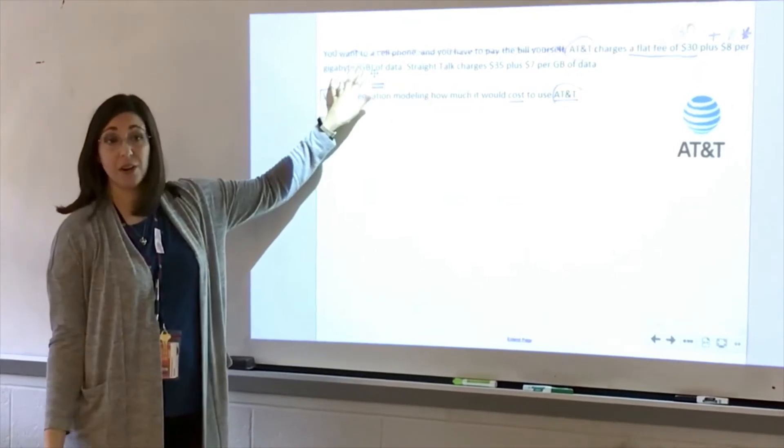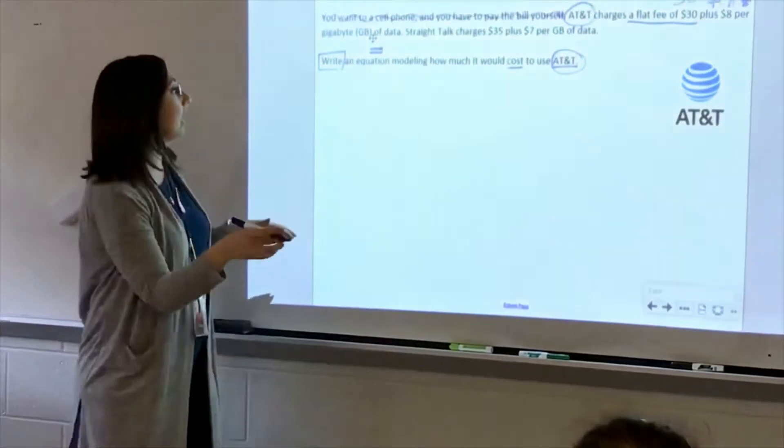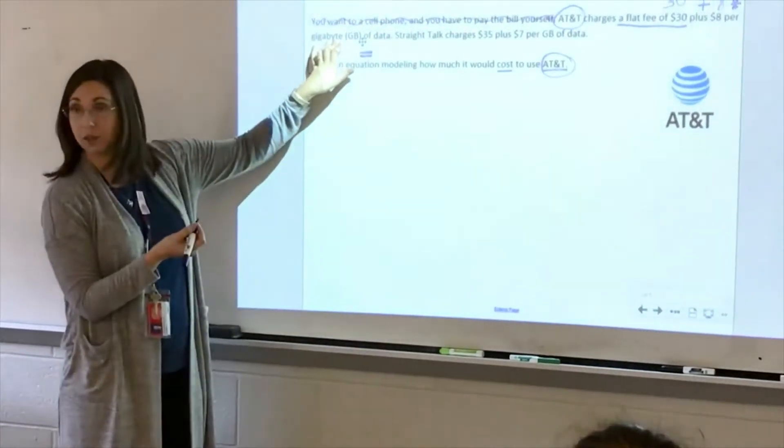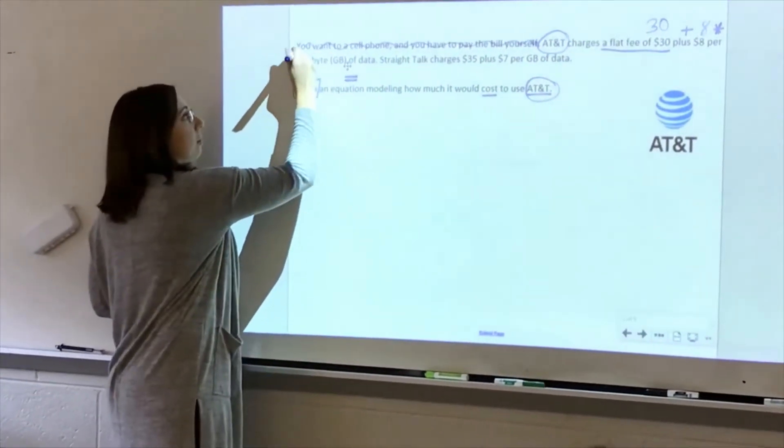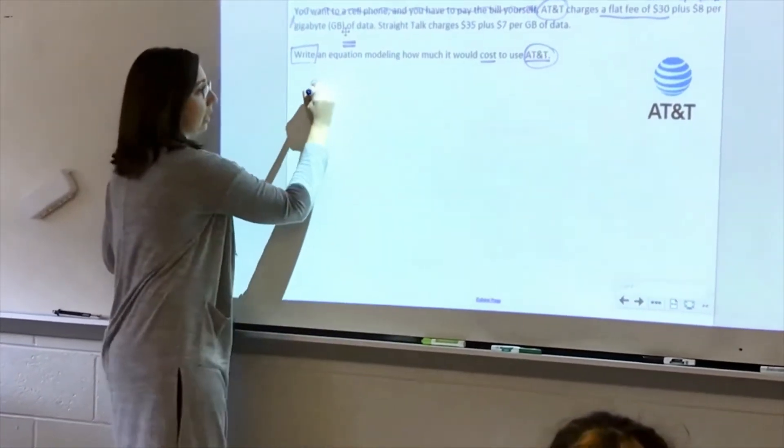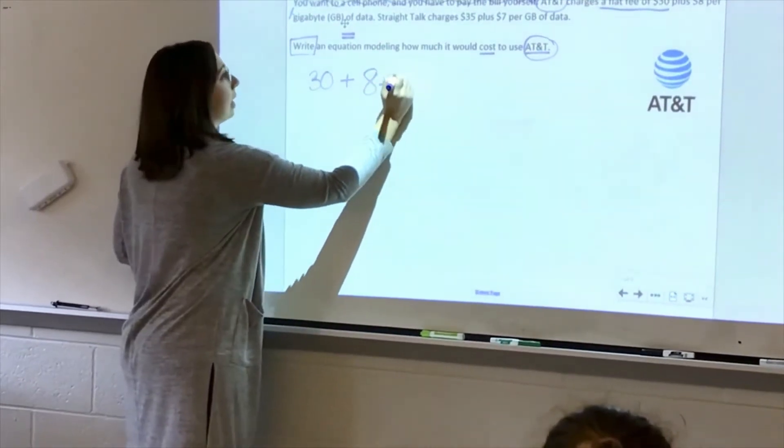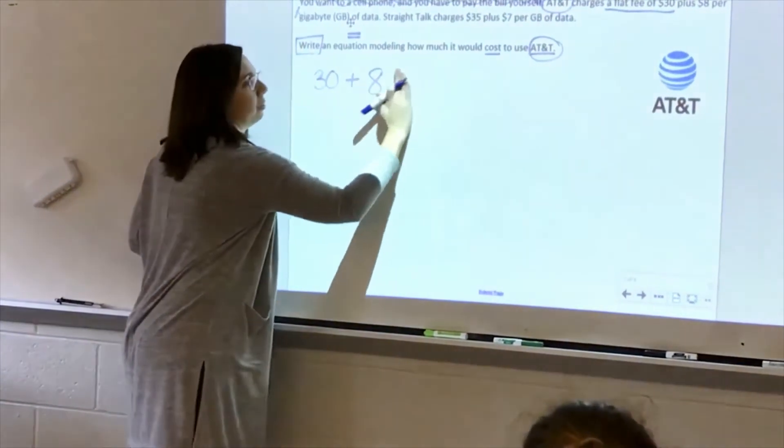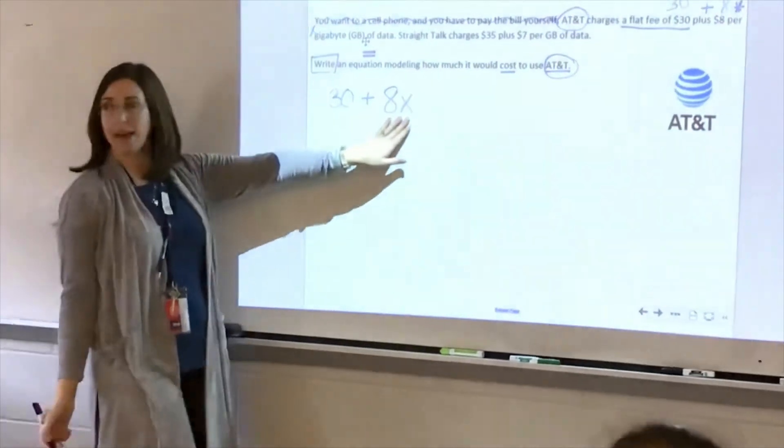We could use X, we could use any variable, right? What's important here is that I define that variable. So what do you want to use? X? We could use O, we could use G, we could use almost any letter. So now let's write this: I'm writing $30 plus $8 per gigabyte. Now do I really need that? We write a coefficient in front of our variable in algebra class. Okay, so now I'm gonna go back and read this a fourth time.